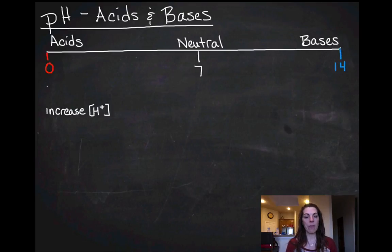So acids have an increased concentration of hydrogen ions. The little brackets mean concentration. They also remove hydroxide ions. So acids increase hydrogen ion, decreased hydroxide ion. So an example is hydrochloric acid. You know that, HCl, hydrochloric acid.